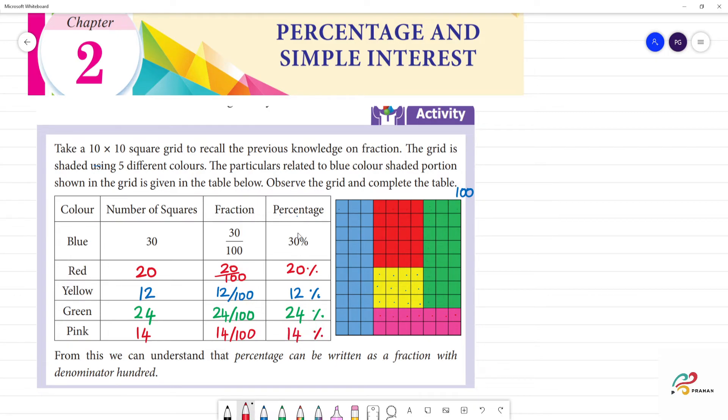If we add everything, we get 100. 4 plus 4 is 8, 8 plus 2 is 10. Remainder is 1. Now 3 plus 1 is 4, 6, 7, 8, 9, 10, so total is 100. Percentage is equal to the value. Blue is 30, total squares is 100, 30 by 100 equals 30 percentage.